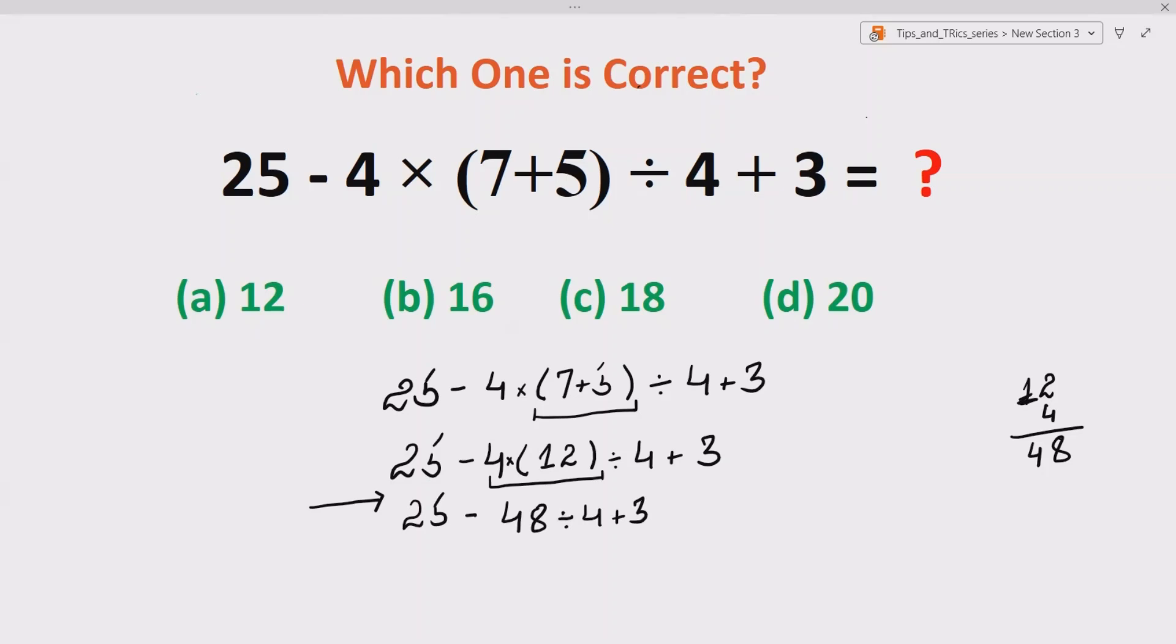Now when 48 divided by 4, it gives us 12. So we have 25 minus 12 plus 3.